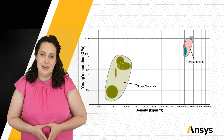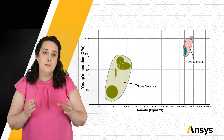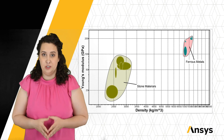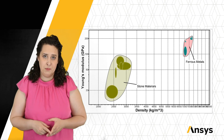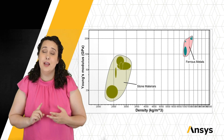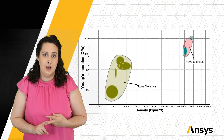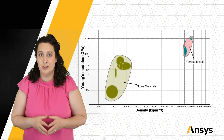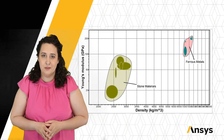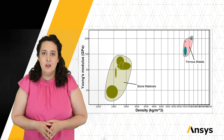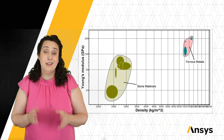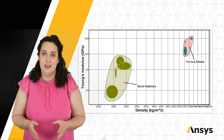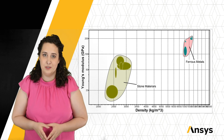Let's look at an Ashby chart specifically plotted for our bridge example. We have stone-like materials and we have ferrous alloys from the iron-carbon phase diagram, which encompasses our steel. I've plotted Young's modulus on the y-axis, which will be our elastic property of interest today.